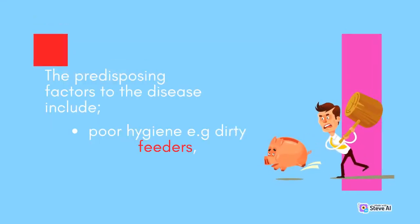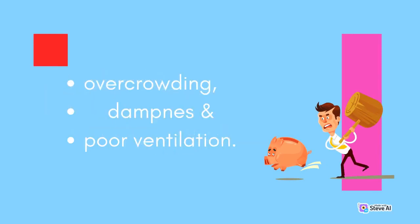The predisposing factors to the disease include poor hygiene, e.g. dirty feeders, overcrowding, dampness, and poor ventilation.